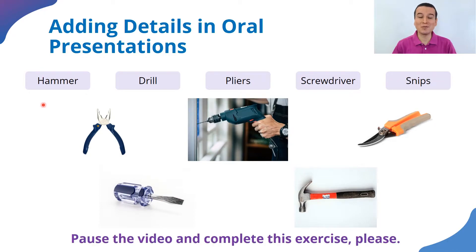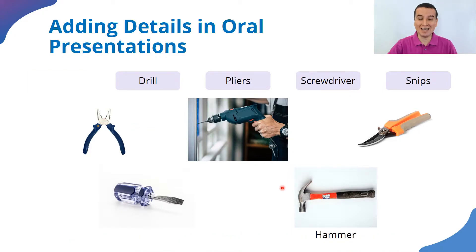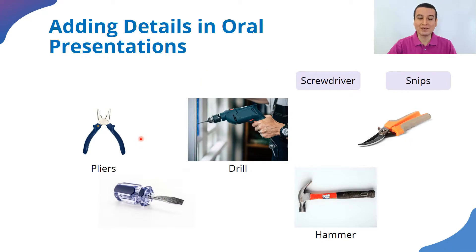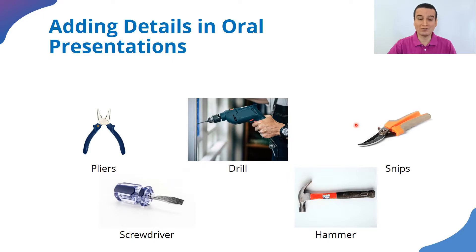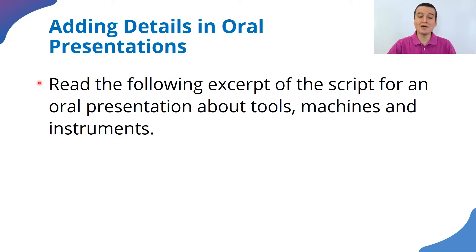Let's look at the answers. What tool is this? This is a hammer. How about this? This is a drill. What's this? These are pliers. What's this? It's a screwdriver. And the last one? Snips — the ones that you use in the garden, for example.